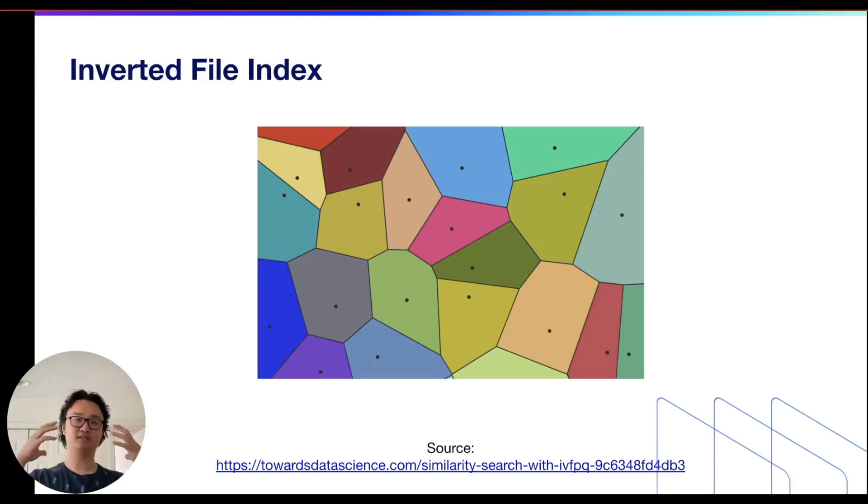So IVF at index time takes your data and forms it into centroids, these clusters of similar sizing, and then at query time it finds the closest data point by first finding the closest centroid and then finding the closest data point in that centroid.